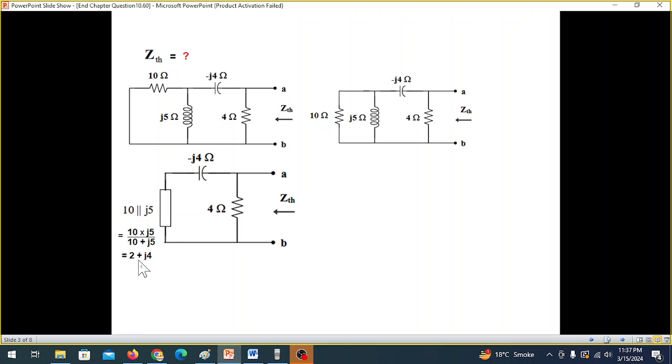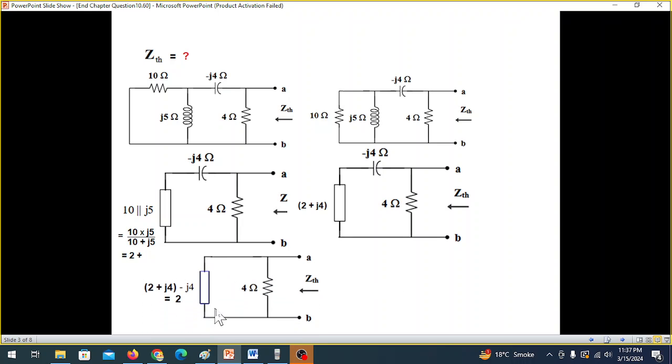Solving this, we find it to be 2 plus J4 and 2 plus J4 minus J4 will be the complete parallel circuit, which will be equal to 2. Z_Thevenin is 2 and 4 in parallel. 2 and 4 in parallel will be 1.33 Ohm. We have found Z_Thevenin.